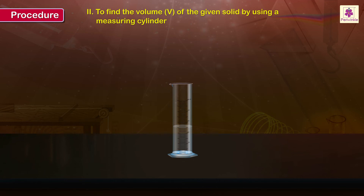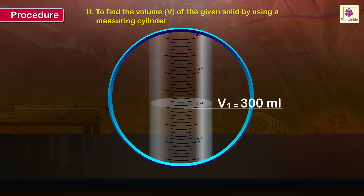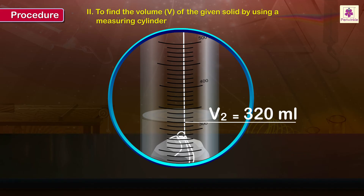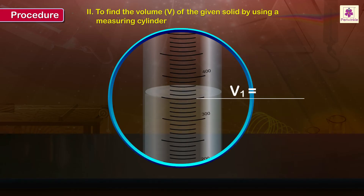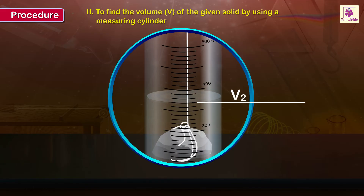Change the volume of the water in the cylinder by adding some water. Now V1 is 300 milliliters. Again suspend the object in the water as before. Record the new value of V2, which is 320 milliliters. Repeat the earlier steps once more: V1 is equal to 350 milliliters, V2 is equal to 370 milliliters.